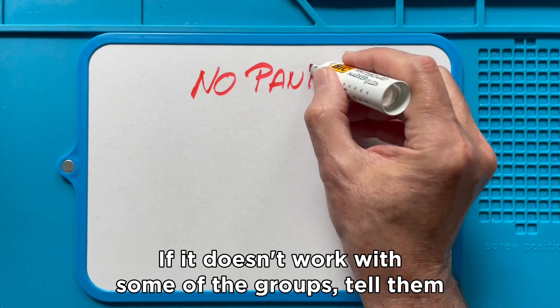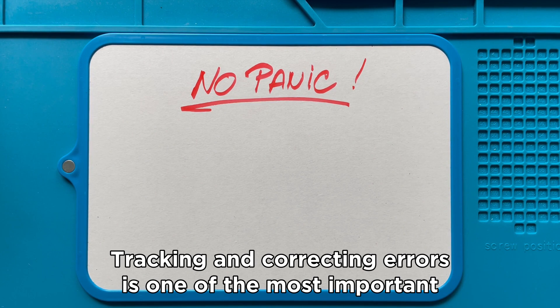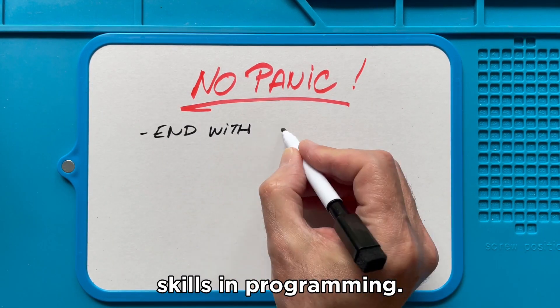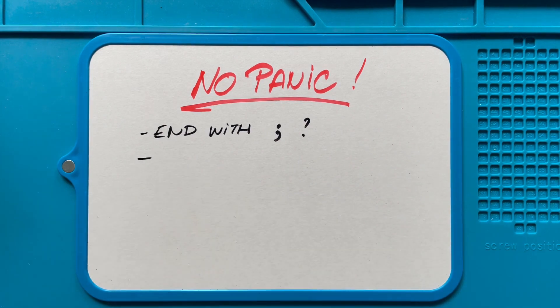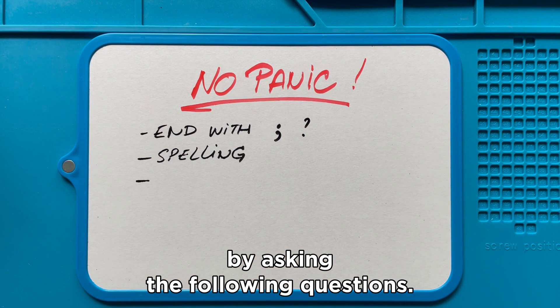If it doesn't work with some of the groups, tell them not to panic. Tracking and correcting errors is one of the most important skills in programming. Encourage them to do some logical fault-finding by asking the following questions.